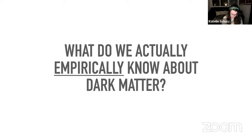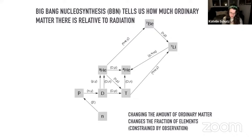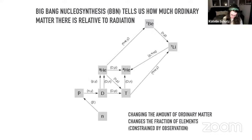I want to make sure we're on the same page about what dark matter is doing, and really focus on our empirical knowledge about dark matter. Because I'm a theorist — and many of you in the audience are theorists — this empirical question may not be something we think about day to day. But it really is an important input for guiding any model building or theoretical developments on what dark matter is. One thing we know empirically is how much regular matter there is relative to photons, and we have handles on this from different epochs. One of those handles is Big Bang nucleosynthesis.